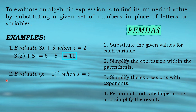Second example: evaluate (x minus 1) quantity squared when x equals 9. Following the steps — first, substitute the given value for the variable: x is 9, so this becomes (9 minus 1) quantity squared. Next, simplify the expression within the parenthesis: since we have two numbers inside, we subtract 9 minus 1 to get 8 squared. Third step, simplify expressions with exponents: 8 squared means 8 times 8, not 8 times 2, so 8 times 8 is 64.